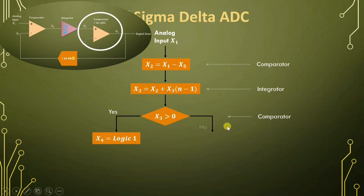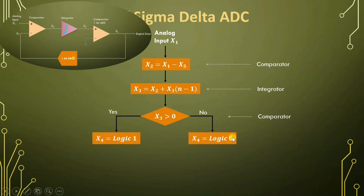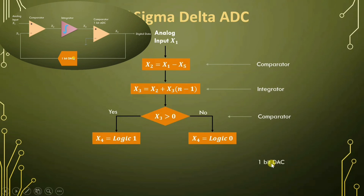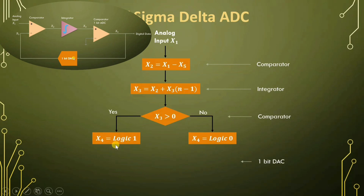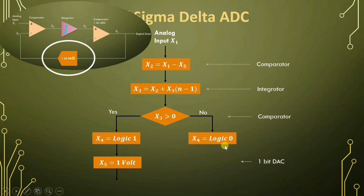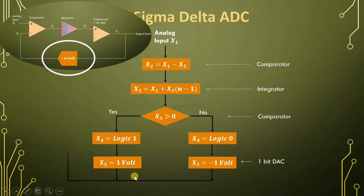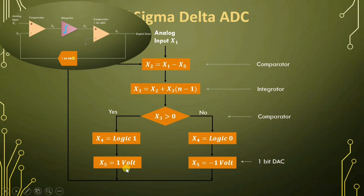If X3 is negative, then the digital output X4 is logic 0. This digital data is taken at the output side and also given to the feedback path, where we have a one-bit digital to analog converter. If logic 1 is at X4, it generates X5 with plus 1 voltage. If logic 0 is at X4, the digital to analog converter generates minus 1 voltage. This X5 is fed back to X2, and this process continuously repeats with respect to the clock, generating digital output data at X4.